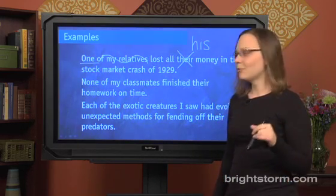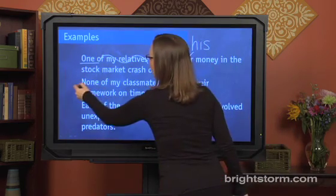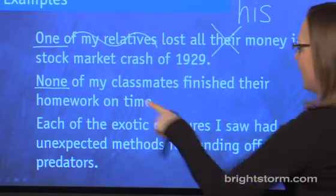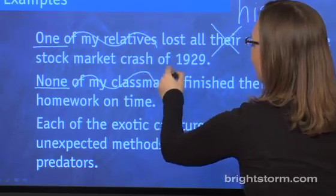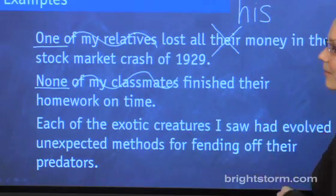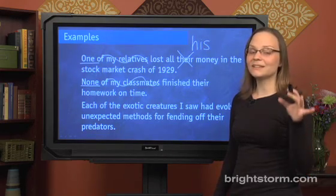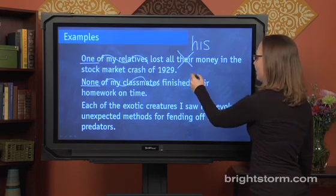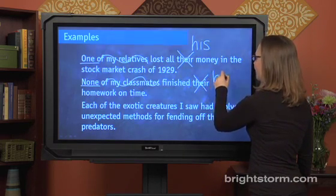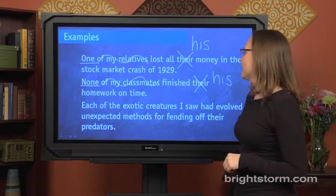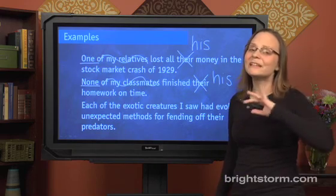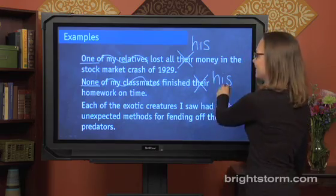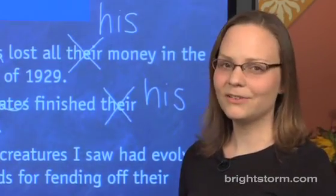The next example is a little more confusing. Here we have another singular word: none. We have to say 'none of my classmates' — which we ignore because it's a prepositional phrase — 'finished their homework on time.' Now, we all talk like this, but this is absolutely wrong. None is a singular word, and there is a plural pronoun. So we have to write a singular pronoun like his. 'None of my classmates finished his homework on time' may sound completely bizarre, but it's right. On the SAT, that's what you're going to need to consider a right answer.